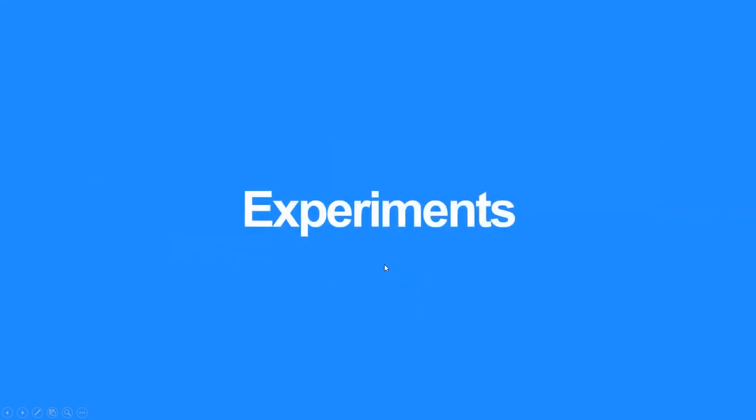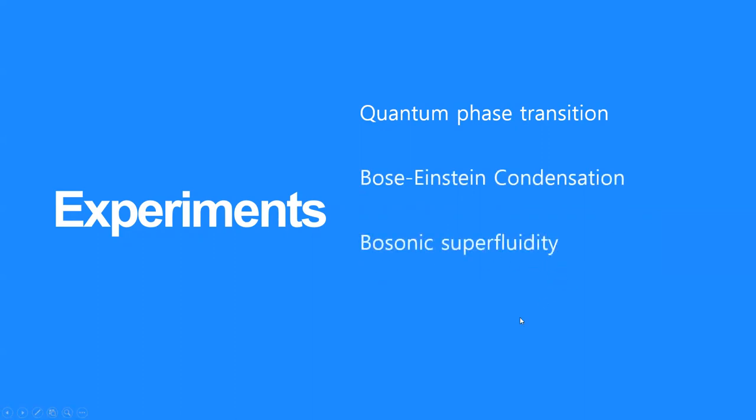Now let's go over some interesting experiments done with ultracold atoms. There are several experiments such as quantum phase transition, Bose-Einstein condensation, Bosonic superfluidity, quantum magnetism, and so on. However, in this video, as mentioned at the beginning, we will focus on Bose-Einstein condensation.